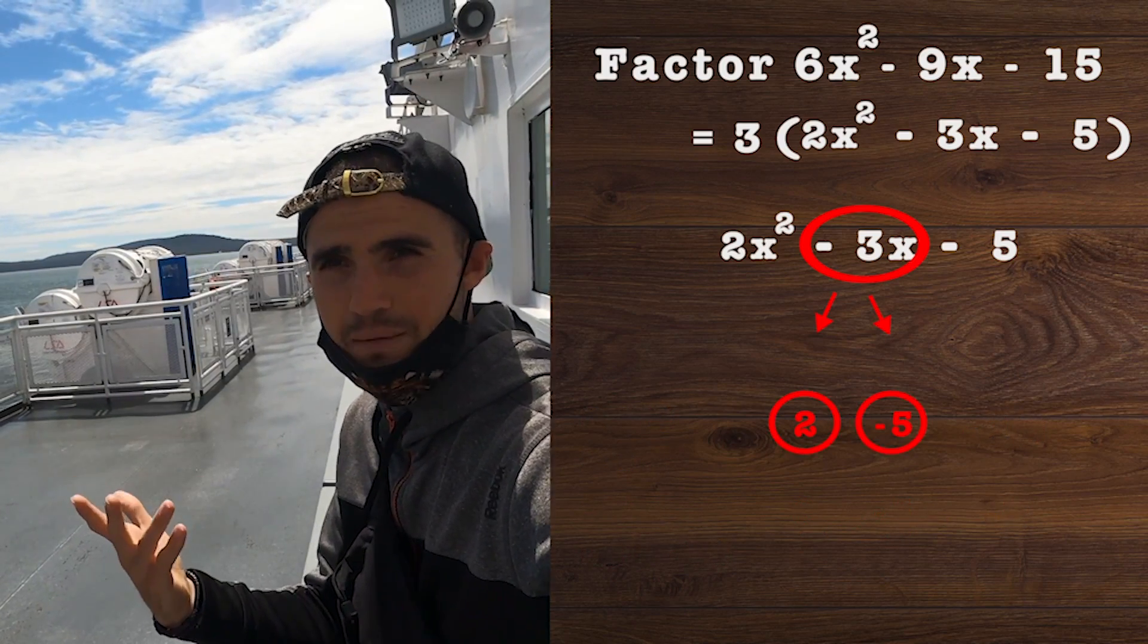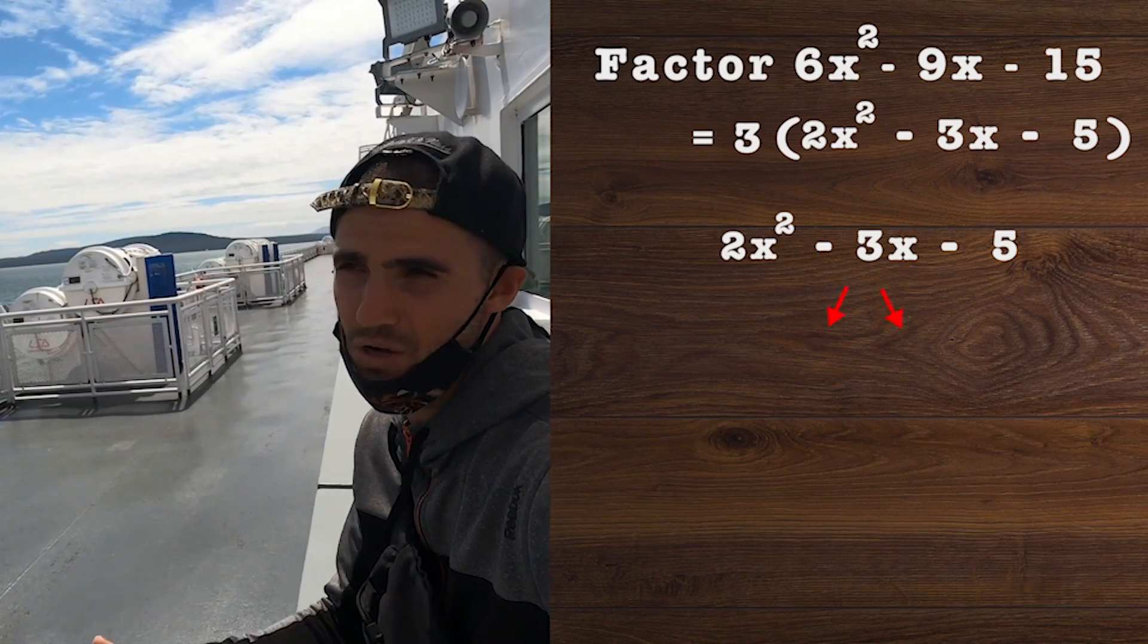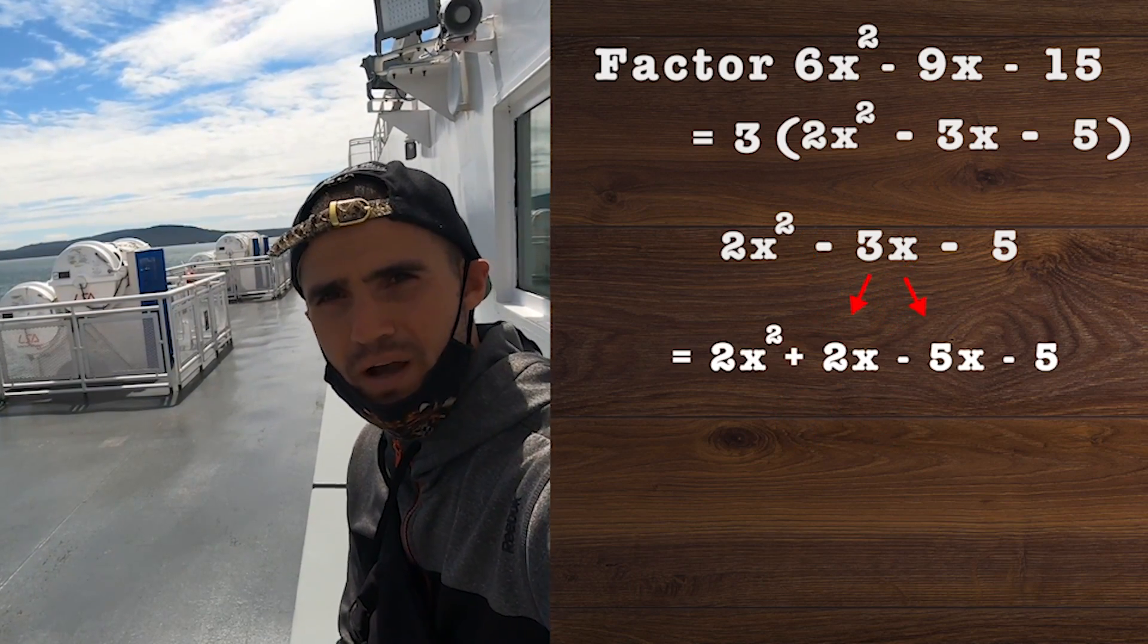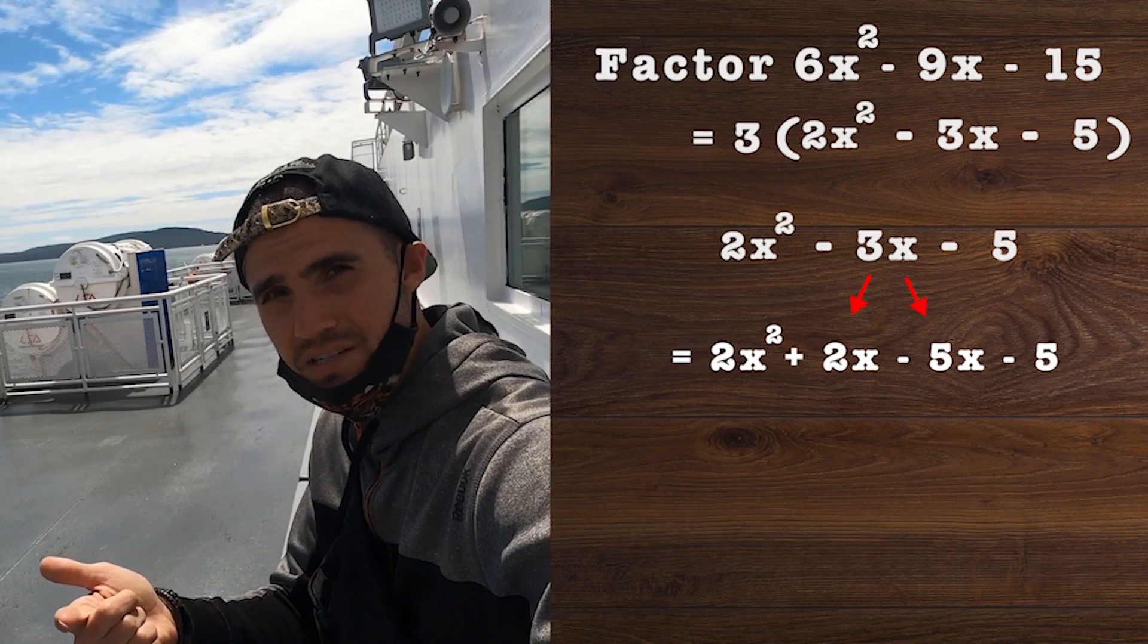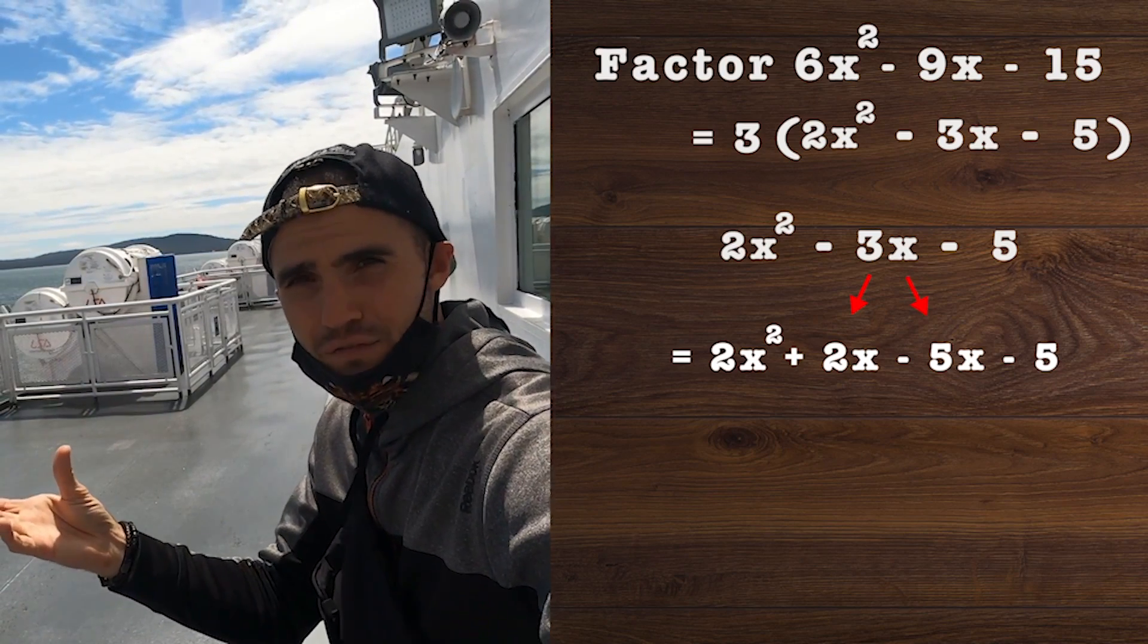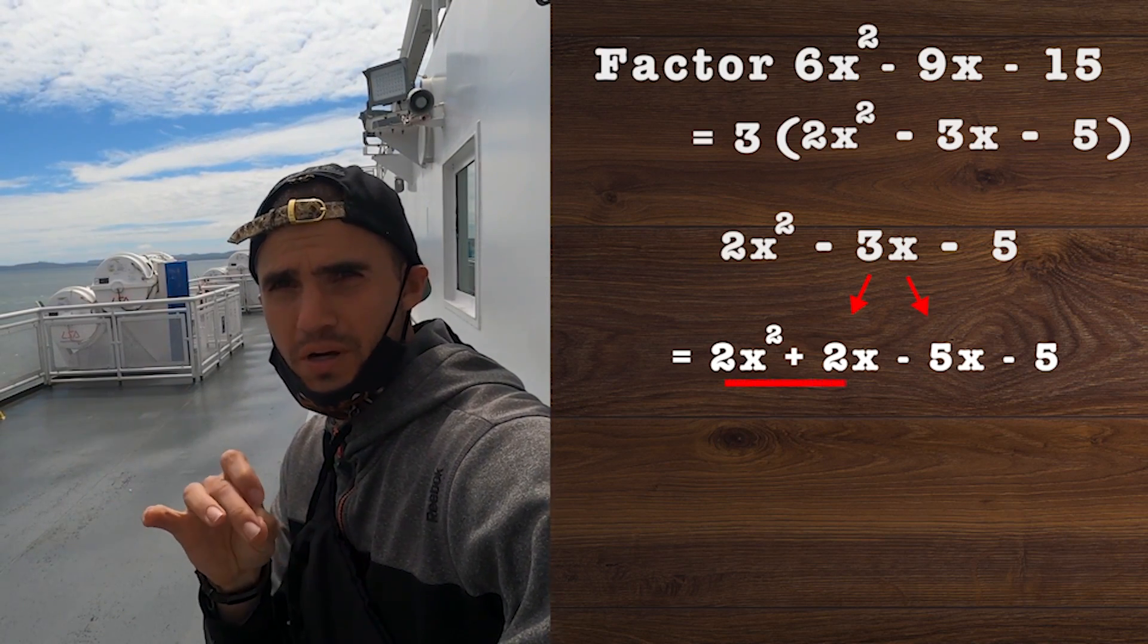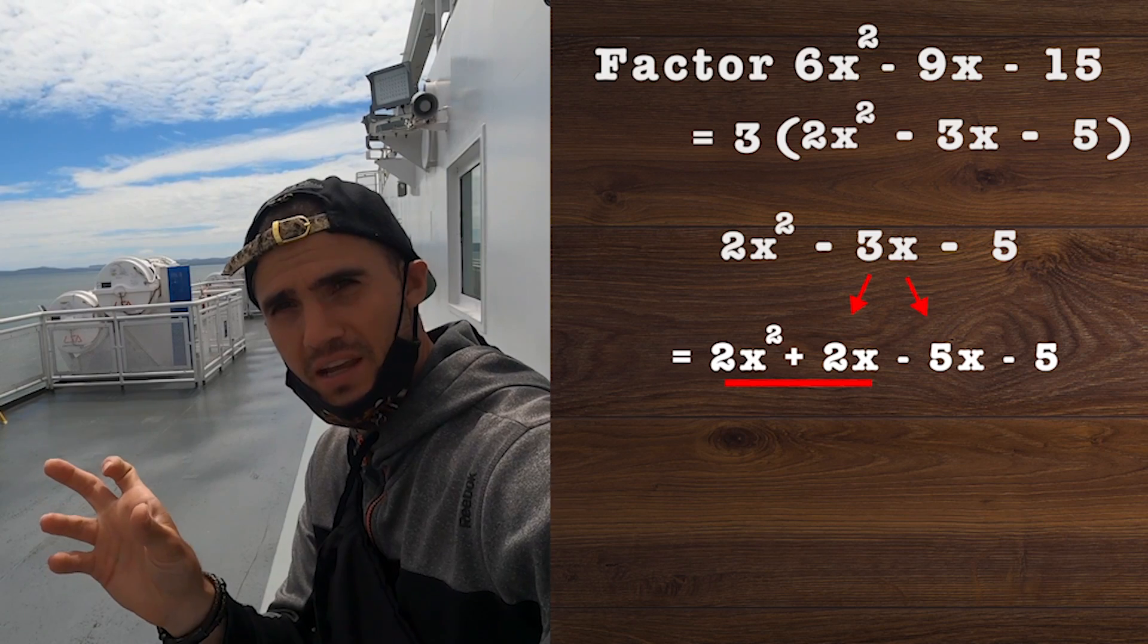So then what we do is decompose that b value in the quadratic into those two values that we found. That's actually where the name decomposition comes from for that factoring process. Our next line would be 2x² + 2x - 5x - 5. From here we just factor by grouping.